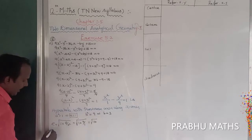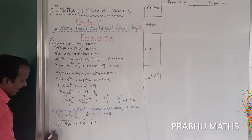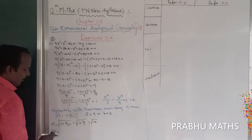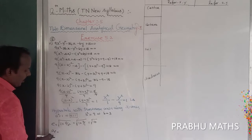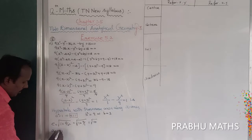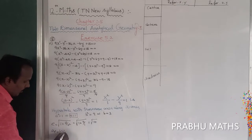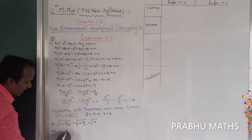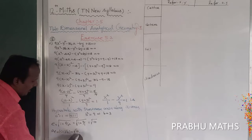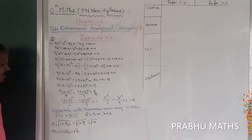Next, find AE. AE equals a times e. The a value is 1, so AE equals 1 times root of 10, which equals root of 10.